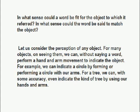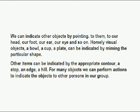Let us consider the perception of any object. For many objects, on seeing them, we can without saying a word perform a hand and arm movement to indicate the object — a gesture. For example, we can indicate a circle by forming a circle with our arms. For a tree, we can with some accuracy indicate the kind of tree using our hands and arms. We can indicate other objects by pointing — to our head, foot, ear, eye, and so on. Homely visual objects like a bowl, cup, or plate can be indicated by miming the particular shape. Other items can be indicated by an appropriate contour — a step, an edge, a hill. For many objects, we can perform actions to indicate them to other persons in our group.